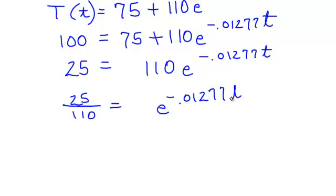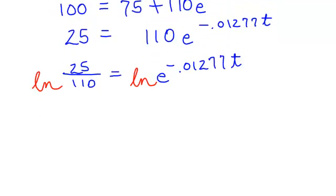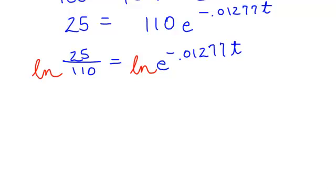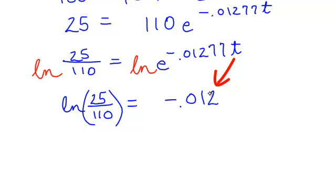I am still searching for my t. I plugged in 100 for the temperature of that turkey. When will that turkey be 100 degrees? Let's take the ln of both sides to continue solving this logarithmic equation. Whatever you do to one side, you have to do to the other. I am not going to work this out yet. I will just leave this, the natural log of 25 divided by 110. Make sure you know that is together. On the right side, the natural log of e to the anything is the anything. So it would be negative point 01277 t.